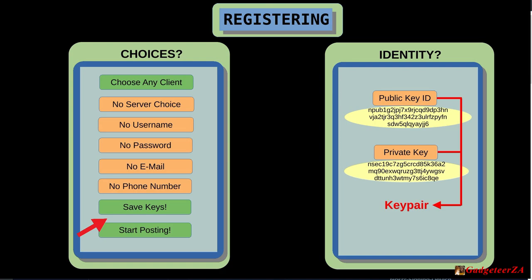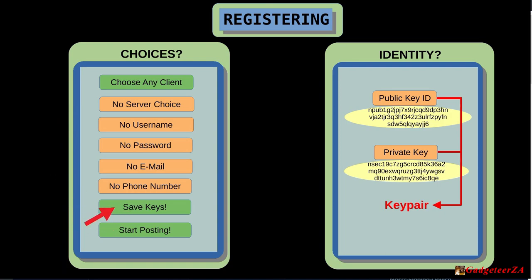You don't have to do it immediately, but you can go into your profile and set an easy-to-remember username, bio, and photo. The moment you log into another client with your public key and authenticate with your private key, you immediately have access to that same profile. If you update it on one client, it updates on all other clients through the relays. In summary: choose any client, click register, save the two keys, and you can already start posting. That's it.